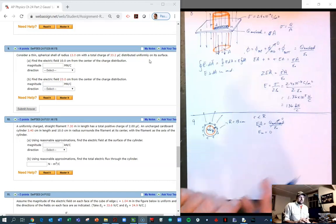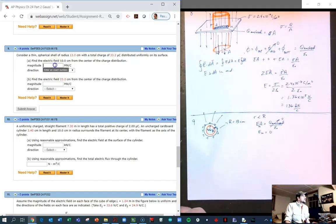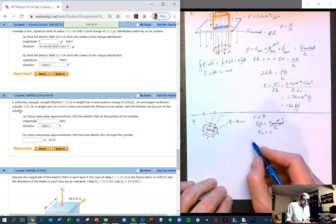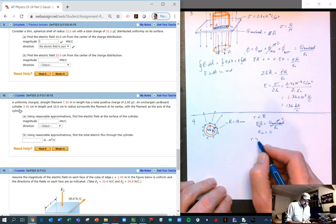So we type that in. The direction, the electric field is zero. Let's see if we're right. Yay. Okay.